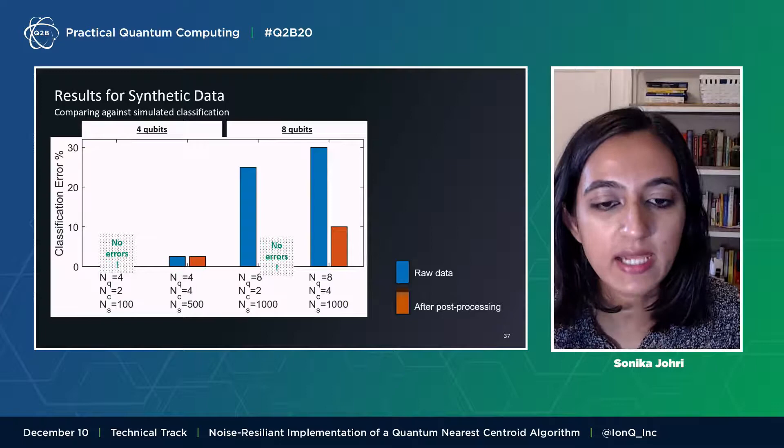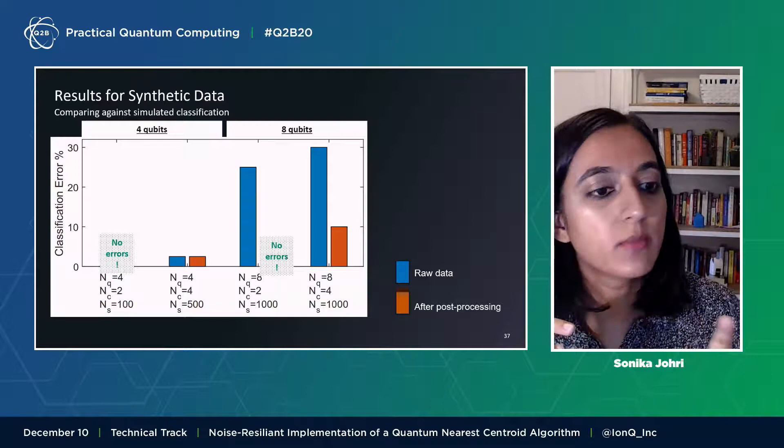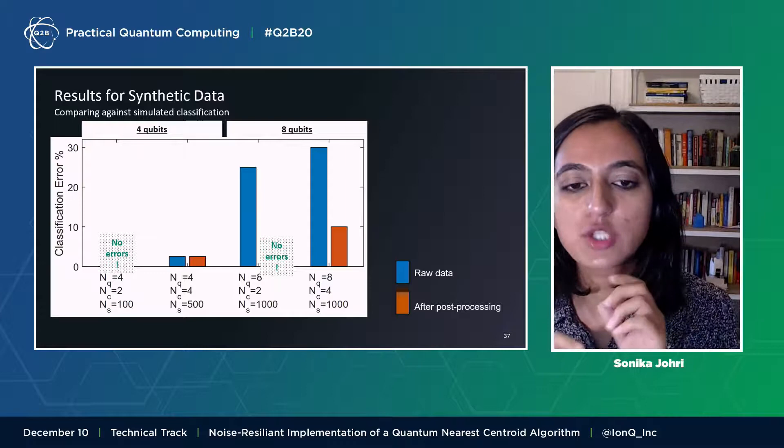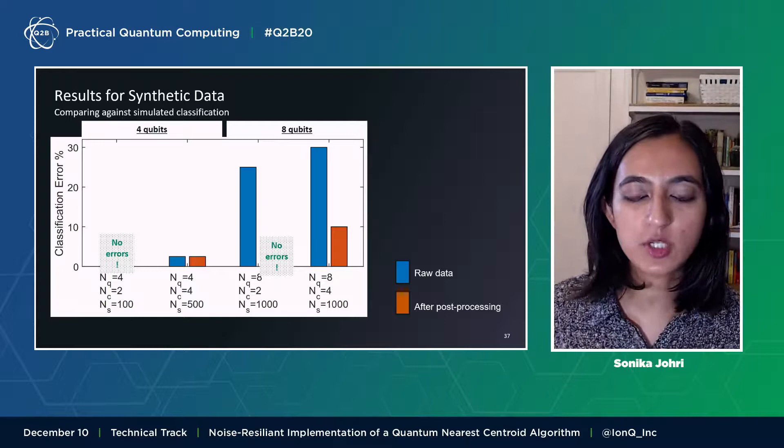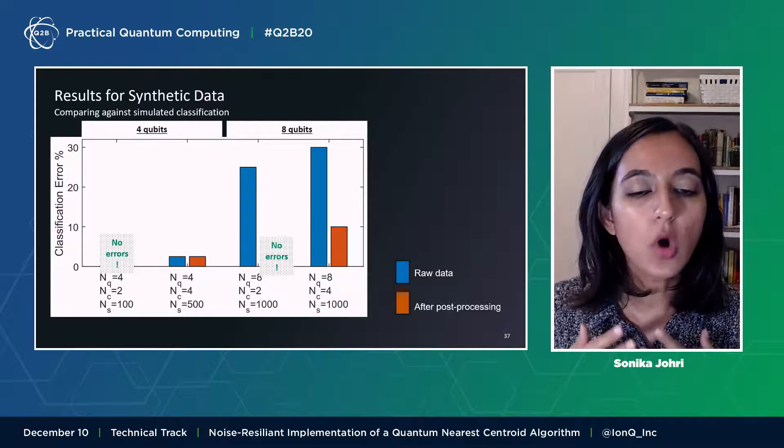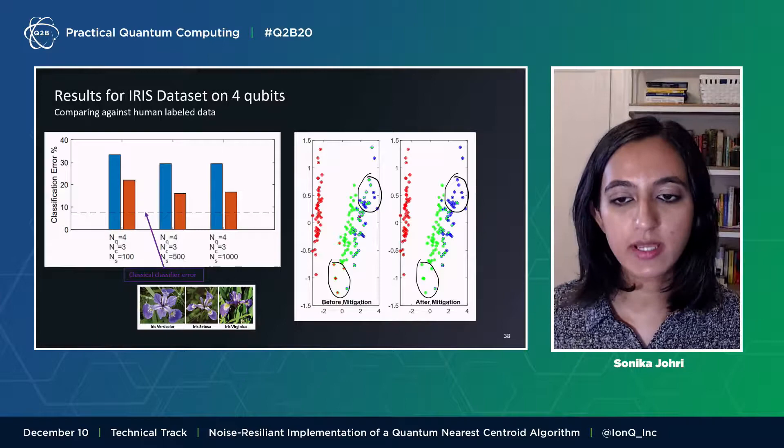First of all, here we show results from our first experiment where we artificially generated four and eight-dimensional data with two or four clusters. On the bottom here, nc is the number of classes and ns is the number of shots. For each case, the blue bars on the left correspond to the results without error mitigation and the red bars on the right correspond to the results with error mitigation. For two classes, we see that for the case of four-dimensional data, we achieve 100 percent accuracy even with as little as 100 shots per circuit and even without error mitigation. For the case of eight-dimensional data and two classes, we also achieve 100 percent accuracy once we apply error mitigation. We also performed experiments with four classes and reached accuracies up to 90 percent for the eight-dimensional case with error mitigation.